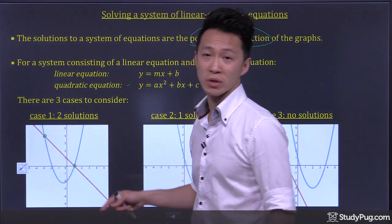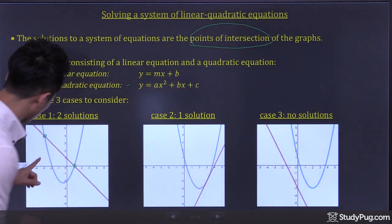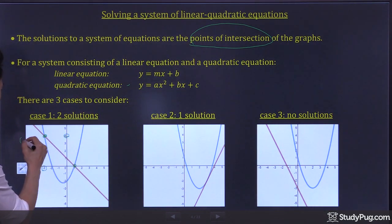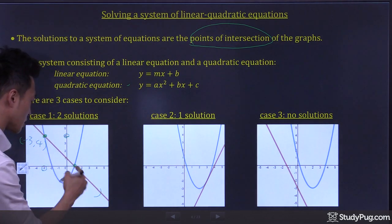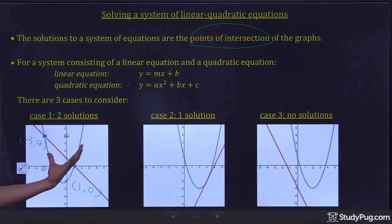And these two points represent the two solutions to the system equation. So for example, this point is when x is negative 3, y is 4. So negative 3 and 4. And this point is when x is 1, y is 0. So those two points are the solutions to the system of equations. And the two solutions are negative 3, 4 and 1 and 0.